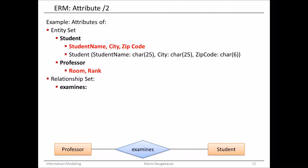We would prefer to write it in the graphical notation. But first, let's look at attributes in the relationship set. The relationship set here is 'examines,' shown in the lower part of the picture. It connects the professor and the student — the professor examines the student on a certain examination day. For this examination, you can also write up some attributes: one attribute would be the grade the student gets after the examination, and another is the date of the examination.